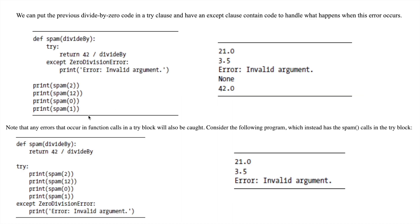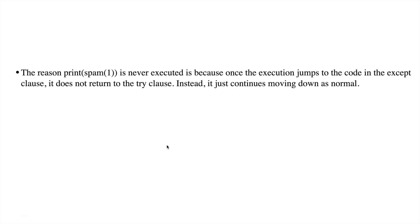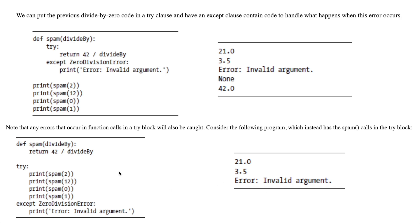The reason the fourth statement, print spam(1), is never executed is that once the execution enters the except clause, it does not return to the try clause. Instead, it continues normal execution from after the try/except block. So the fourth statement is never executed because the program never goes back to the try clause.